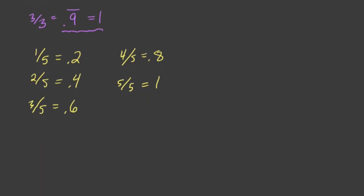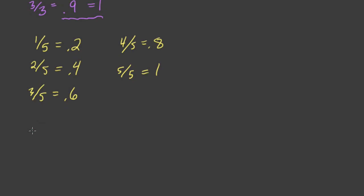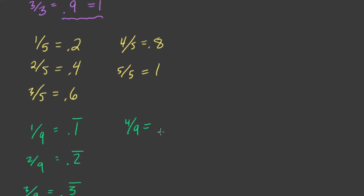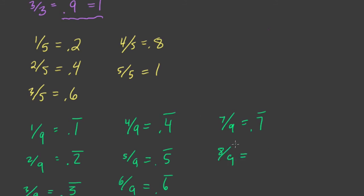Perhaps the final landmark fraction I find myself using most frequently is ninths. Let's go up to 3 ninths: 3 ninths is 1 third, or 0.3 repeating. So 1 ninth would be a third of a third — 0.1 repeating. Then 2 ninths is double that: 0.2 repeating. You might see a pattern: 4 ninths is 0.4 repeating, 5 ninths is 0.5 repeating, 6 ninths is 2 thirds — 0.6 repeating, 7 ninths is 0.7 repeating, 8 ninths is 0.8 repeating. The pattern is simply that you take your numerator and make that the repeating decimal digit. So 9 ninths is 0.9 repeating, which again equals 1.